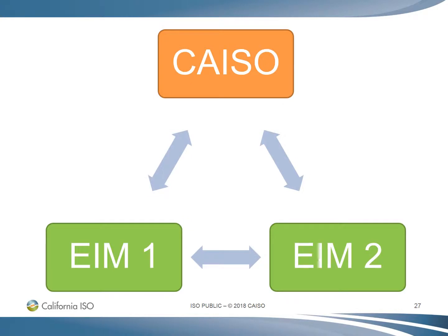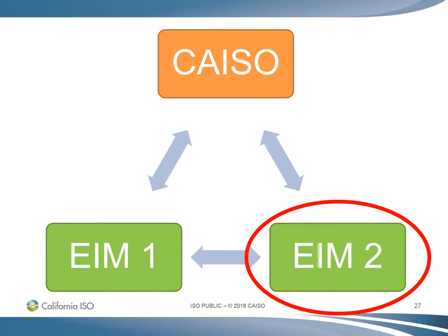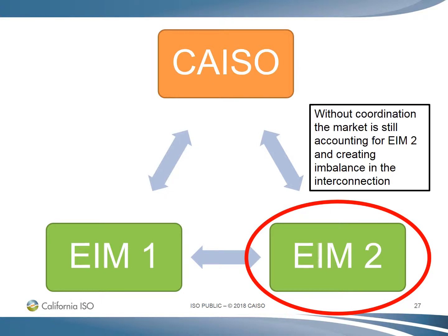Consider this example of two EIM entities in the California ISO with ETSR schedules between each entity. If EIM Entity 2 experiences a problem and, without coordinating with EIM Entity 1 and the California ISO, disconnects their EMS, it creates a situation in which the market is still optimizing solutions based on all three entities. However, EIM Entity 2 is not participating in the market or responding to those optimizations. Without coordination, the market is still accounting for EIM Entity 2, and this creates imbalance in the interconnection.